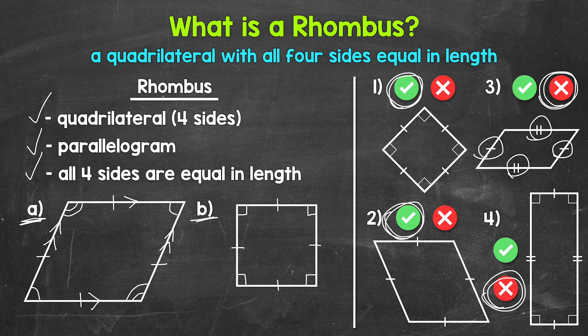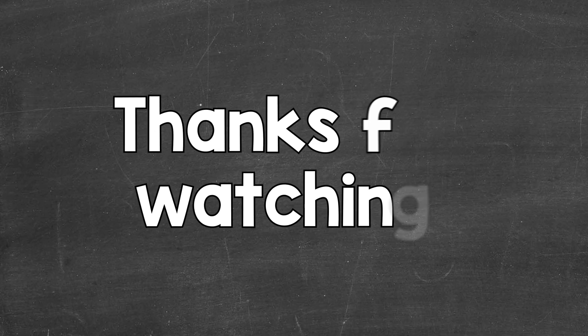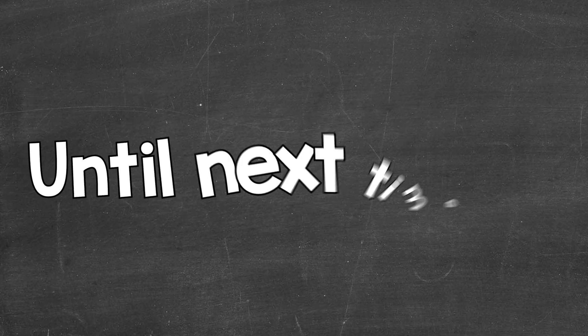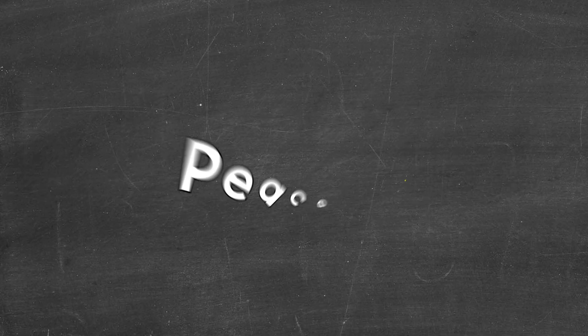So there you have it — a basic overview of what a rhombus is. Just remember, a rhombus is a quadrilateral with all four sides equal in length. I hope that helped. Thanks so much for watching. Until next time. Peace.